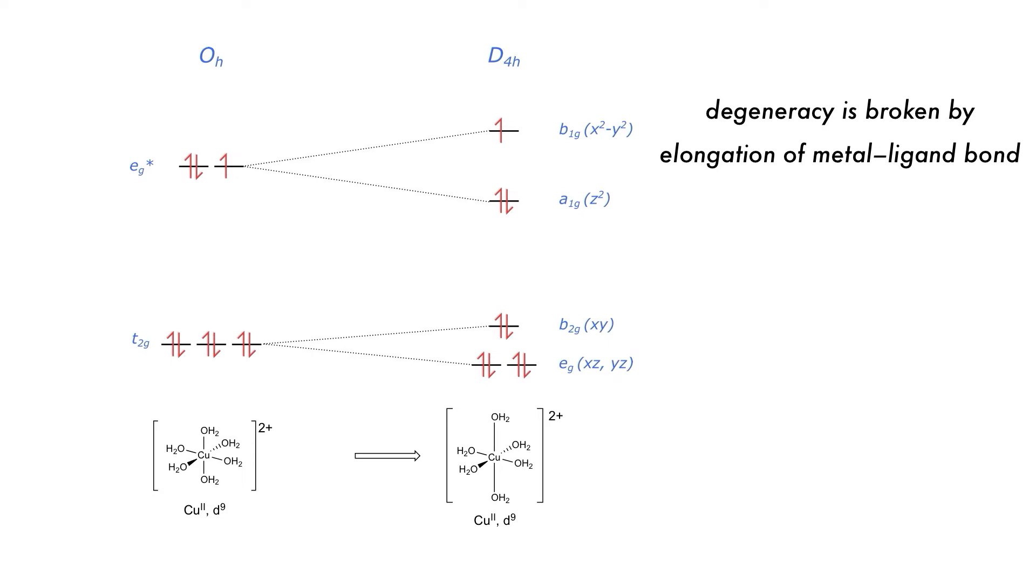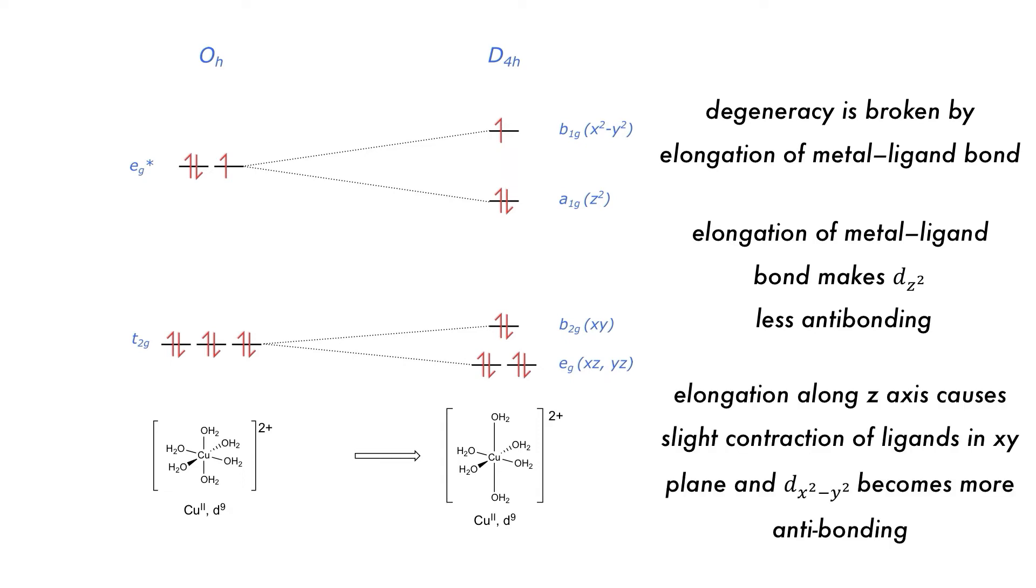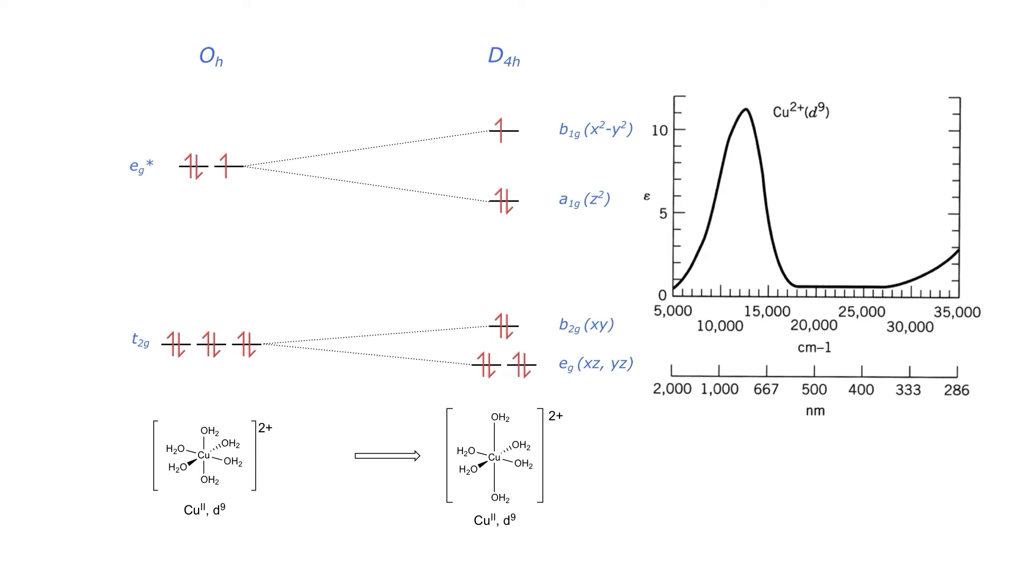The dz-squared lowers in energy because it is stabilized by the ligands being further away, which weakens the metal ligand bond, reducing the anti-bonding character of the dz-squared orbital. Elongation along the z-axis causes a slight contraction of the metal ligand bonds in the equatorial xy plane, causing the dx-squared minus y-squared orbital to become more anti-bonding. The degeneracy is now broken, and there is only one low energy way to place the electrons in the 5d orbitals.